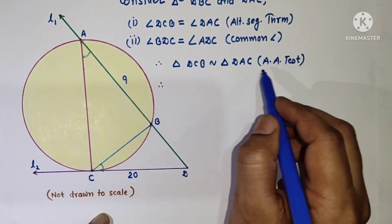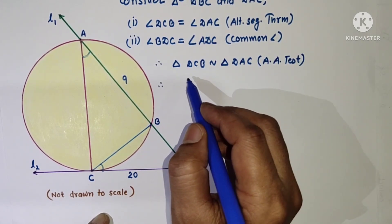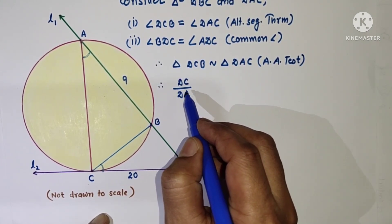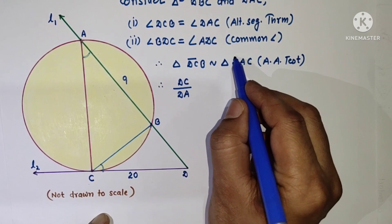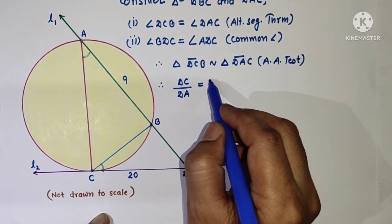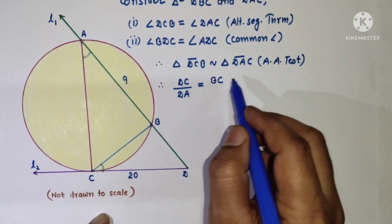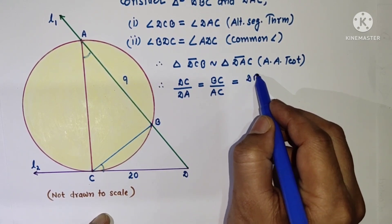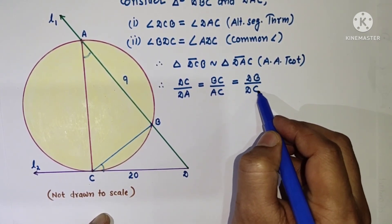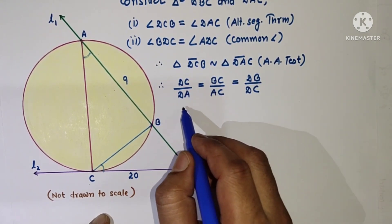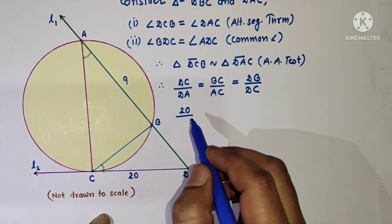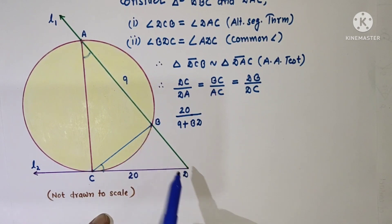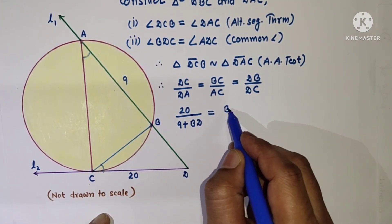Since the triangles are similar, corresponding sides are proportional. So DC by DA is equal to BC by AC, and that is equal to DB by DC. We are given DC as 20, so: 20 by AD, where AD equals AB plus BD, which is 9 plus BD, equals BC by AC.